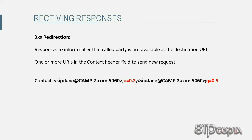For example, if Tarzan called Jane at camp 1 and received a 3xx response with the following contact header field, Jane might be in camp 2 or camp 3, with camp 3 being a higher possibility.